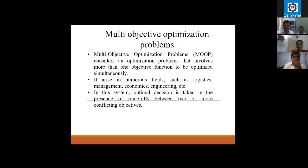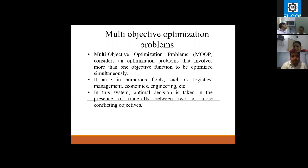The reason I chose multi-objective optimization is that it considers an optimization problem involving more than one objective function to be optimized simultaneously. It arises in numerous fields such as logistics management, economics, engineering, and many others. In this system, the optimal decision is taken in the presence of a trade-off between two or more conflicting objectives.